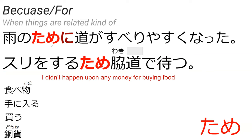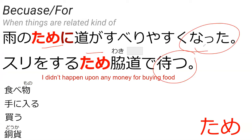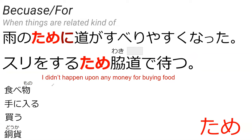So whether tame means 'because' or 'for' is context-based, normally indicated by past tense or present tense at the ending. But it doesn't have to be that — you can have past tense being 'for' and stuff like that, so it's ultimately just context-based.